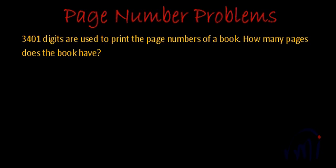Hi everyone. Here we have a very unusual problem which you usually don't come across in your school textbooks, so we will try and solve it. The problem is related to page numbers of a book. It says 3401 digits are used to print the page numbers of a book. How many pages does the book have? We have to find the number of pages where 3401 digits are used to print page numbers.